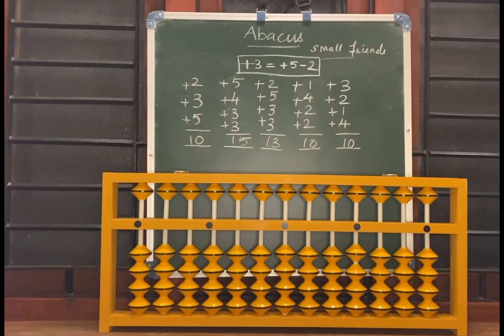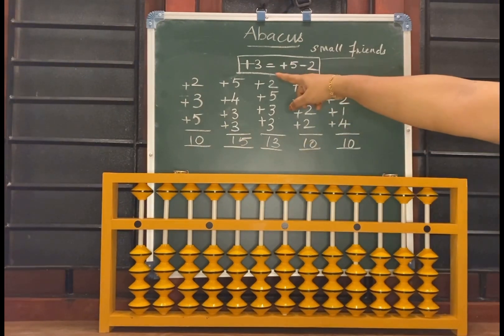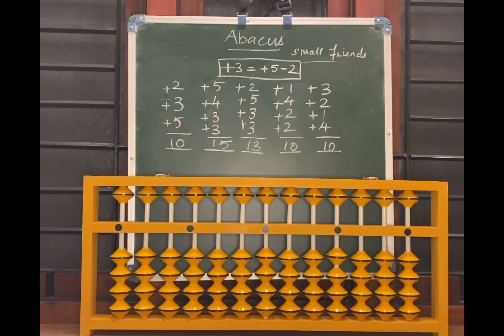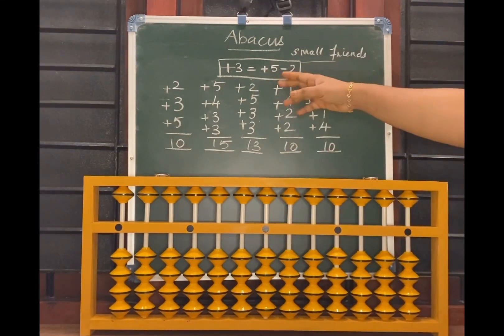Hi everyone, welcome to Abacus Math Magic channel. We already discussed what is small friends and how to use the small friends in abacus. Now one more formula I am going to explain. Now see here, what is the formula here? Add 3 is equal to add 5 less 2. In small friends, 3's friend is 2 here.